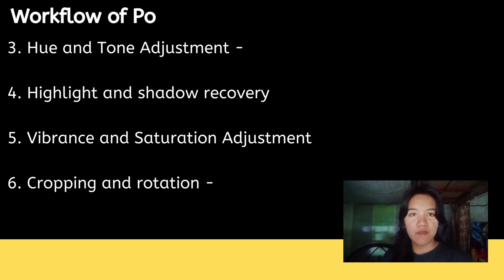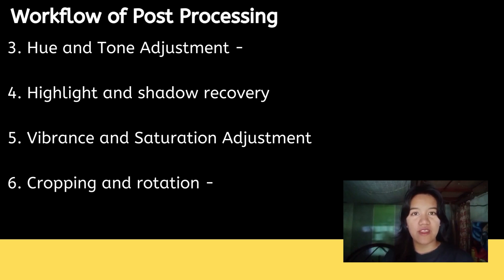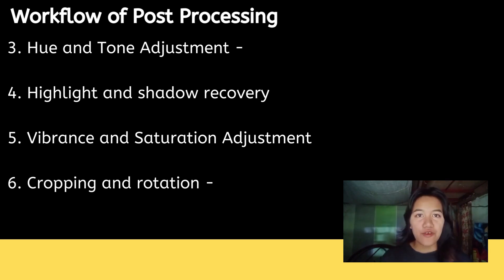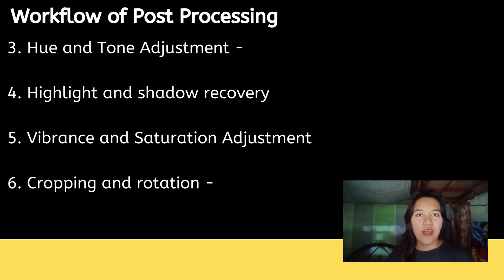Number 3 is hue and tone adjustment, used to adjust the hue, saturation, and lightness of the entire image. Number 4 is highlight and shadow recovery, an image processing technique used to correct exposure. Number 5 is vibrance and saturation adjustment, which affects all color intensity. Saturation affects all pixels, while vibrance only adjusts the less dominant colors.